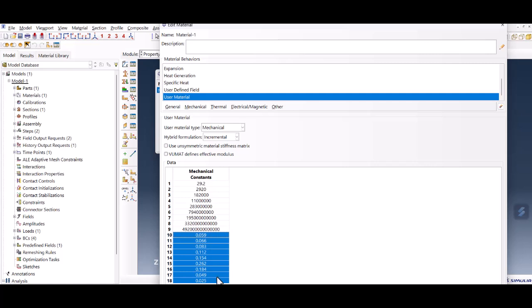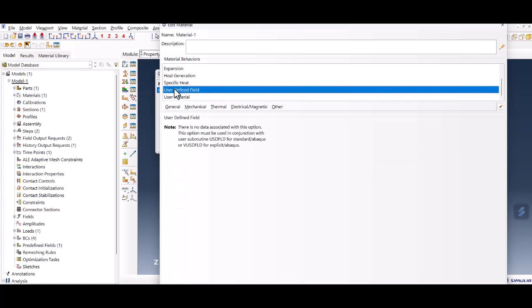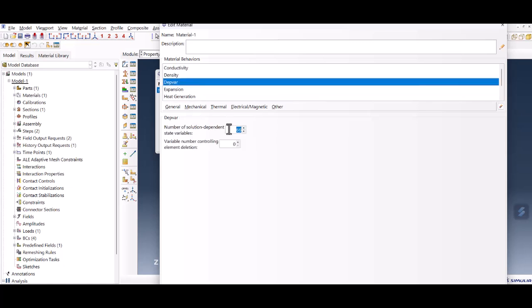In the next step, we've increased the number of state variables because more state variables are used in the viscoelastic model. With just these two changes, you can modify only the UMAT subroutine and use the same Abaqus model introduced in the previous video for analyzing problems using the viscoelastic model.